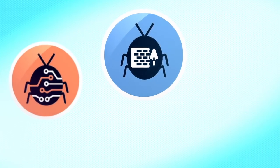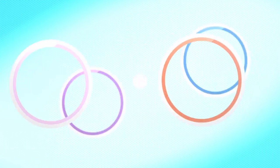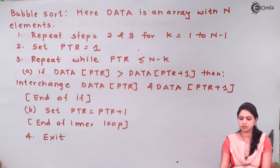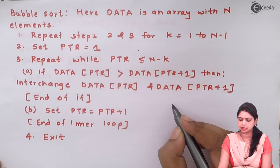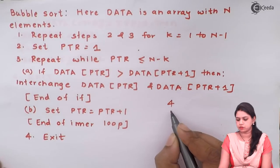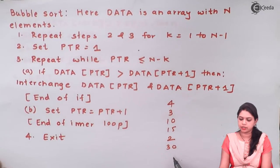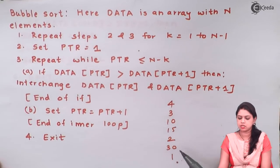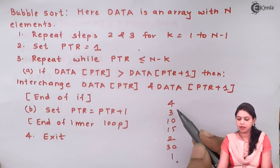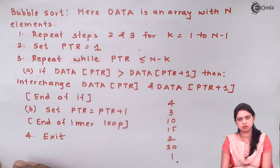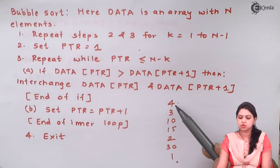We will be discussing the bubble sort algorithm. Suppose I have a list with elements 4, 3, 10, 15, 2, 13, and 1. This list is not sorted. We have to sort this list using bubble sort. First we will see how to sort with an example and then move on to the actual algorithm.